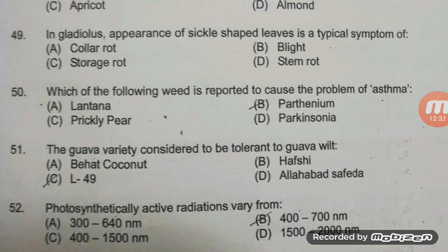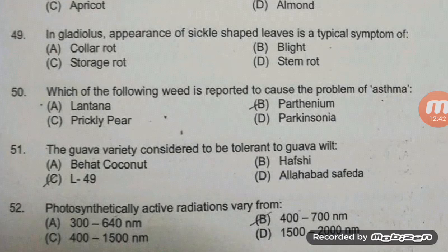Which weed is reported to cause asthma? The right answer is B — Parthenium. The guava variety considered tolerant to guava wilt — the right answer is Allahabad Safeda, which is tolerant to guava wilt.